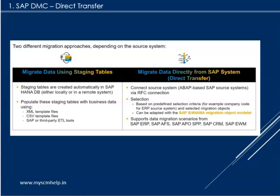Another option available in the data migration cockpit — I believe from S4 HANA 2022, especially in the on-premise edition — is to migrate data directly from an SAP system. This means if you have an SAP ECC system and want to migrate to S4 HANA, you can establish an RFC connection between the two systems and directly pull data from ECC into S4 HANA. This is called direct transfer, and it has prerequisites around enhancement pack levels.